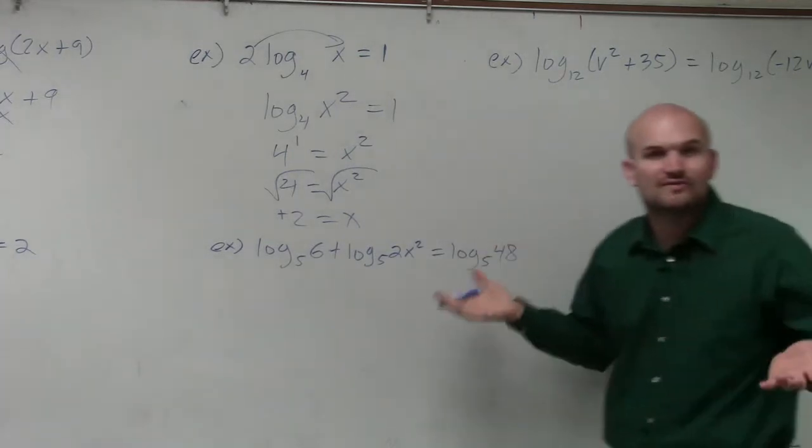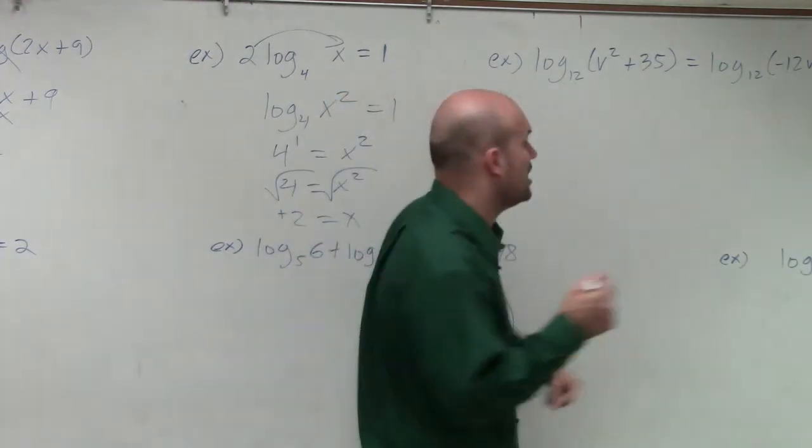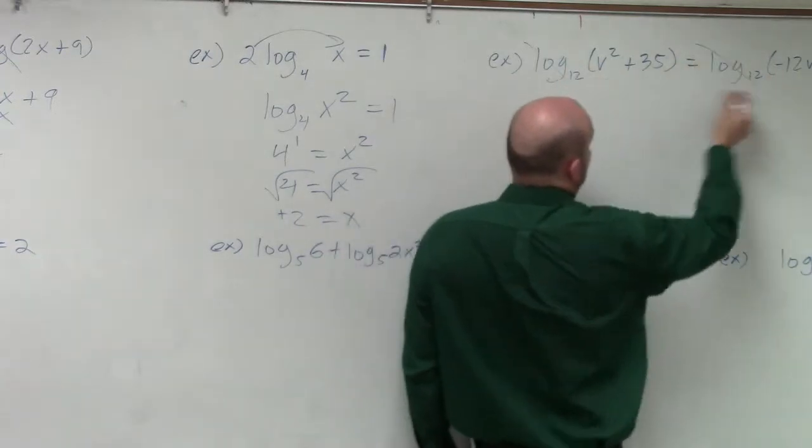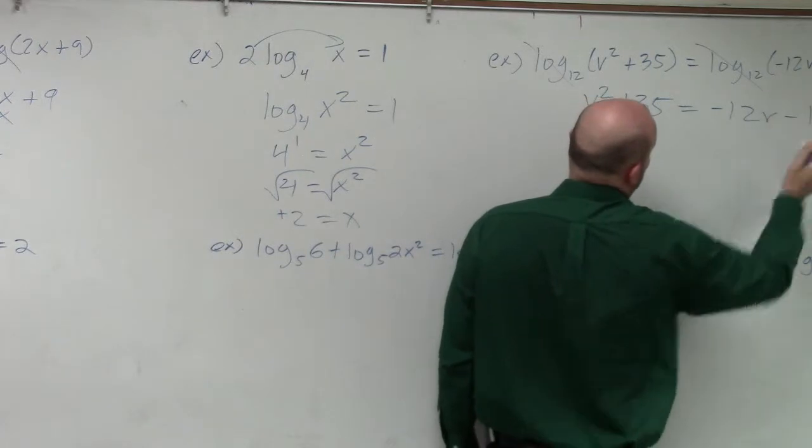Basically, first of all, it looks very confusing from the start. So the first thing you want to do is notice that it's a logarithm equal to another log. So cancel out. v squared plus 35 equals negative 12v minus 1.